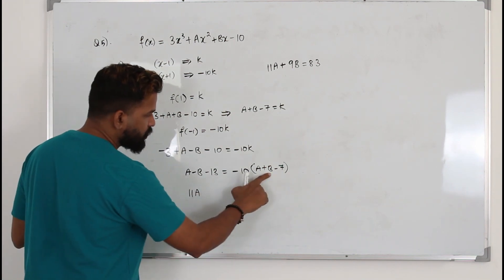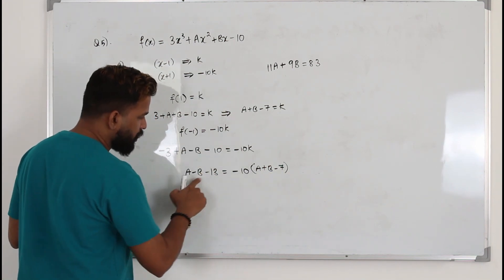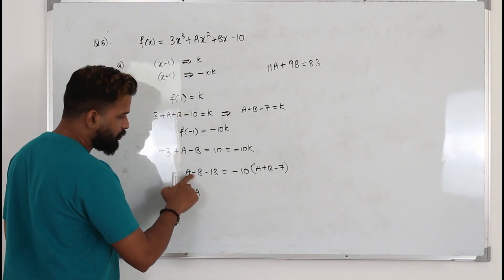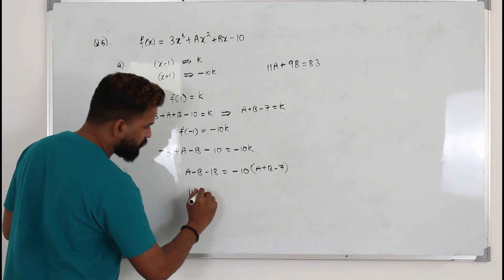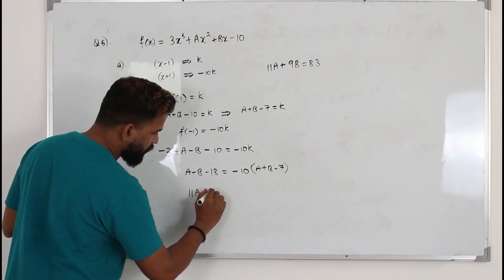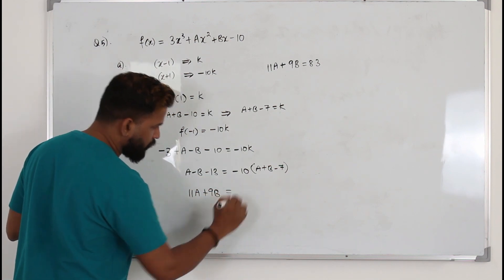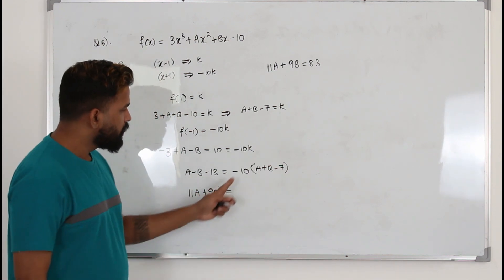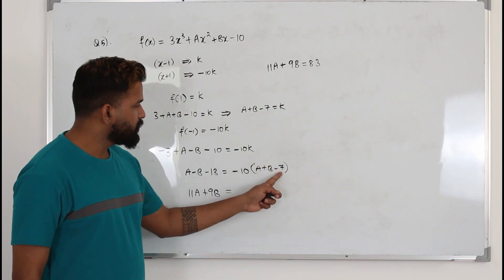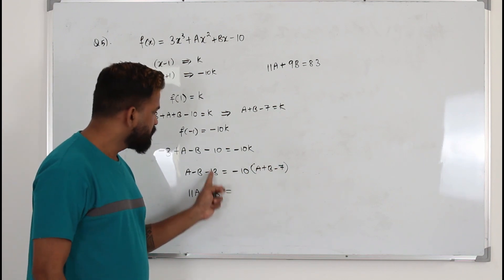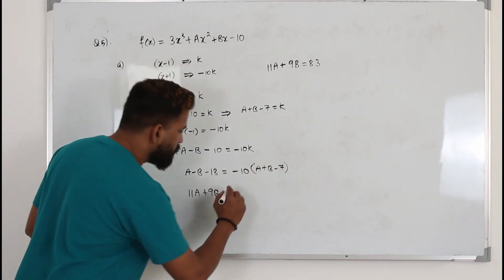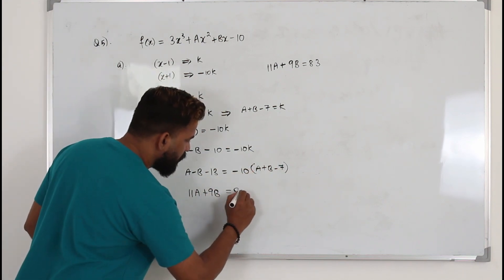After combining: -10b comes here plus 10b gives 9b, and the constant -1 + (-13) × (-10) brings in 83. So the final equation is 11a + 9b = 83.